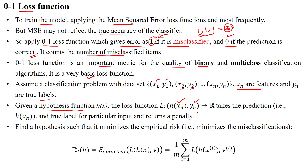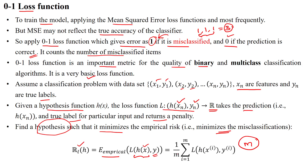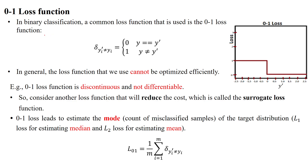The loss function takes the predicted value and the true label value, and if there is any loss it returns a penalty. We need to find the hypothesis that minimizes the empirical risk. To minimize misclassification we find the hypothesis function with respect to the empirical expected loss — computing the loss between each sample, where we have m finite samples, summing all sample losses and taking the average.